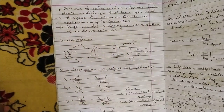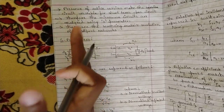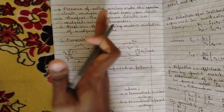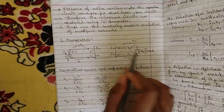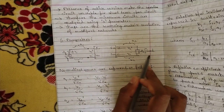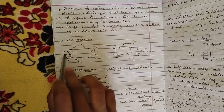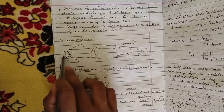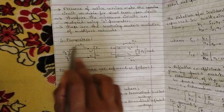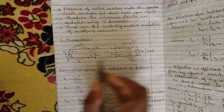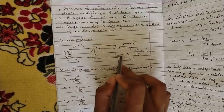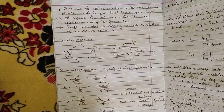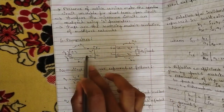Now let us discuss S-parameters with respect to the microwave circuit. I have drawn one circuit/network block with some inputs and outputs. At the output side there is a load impedance ZL, and the input impedance is ZG, with a voltage source. The S-parameters written for this network are S11, S12, S21, S22, and the wave variables are a1, a2, b1, b2.